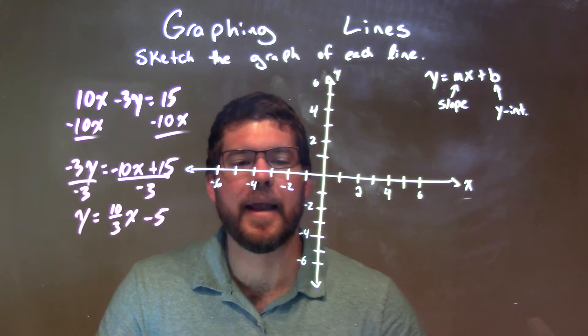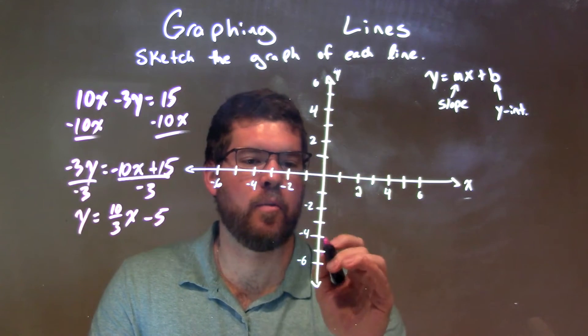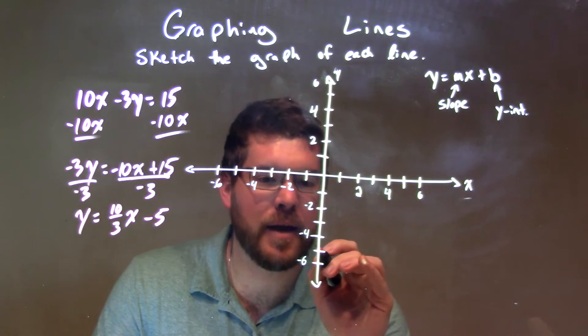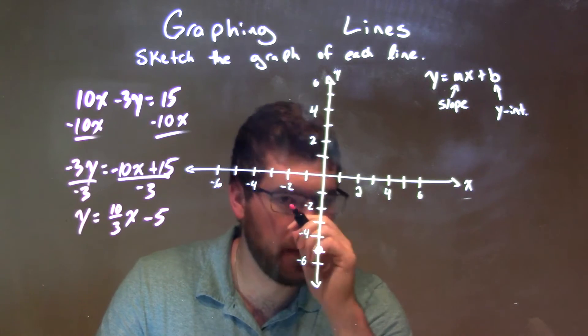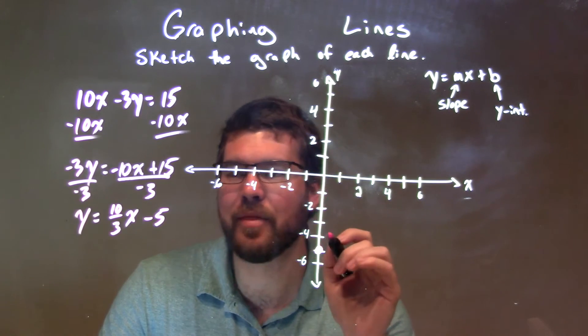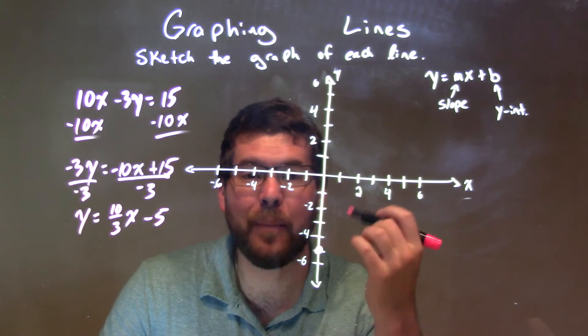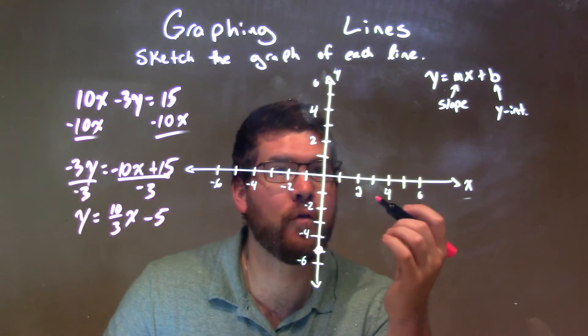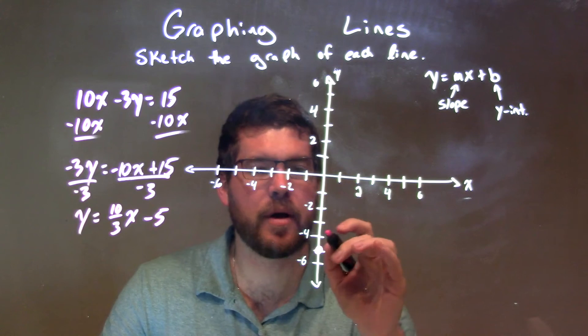Negative 5 is our y-intercept, so we have our y-intercept right here at negative 5. And then our slope is 10 thirds, so we're going to go up 10 units over 3.